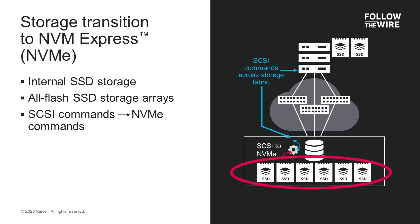Those same faster NVMe SSDs started showing up in the hybrid or flash disk arrays. In the storage network however, the language was still SCSI, so there's a translation that has to occur between the SCSI and the NVMe language — happening in the flash disk array and also at the host computer. The problem is this transition slows down the processing and adds latency, which can somewhat negate the performance benefits customers are expecting by moving to the faster all-flash or hybrid flash storage arrays.